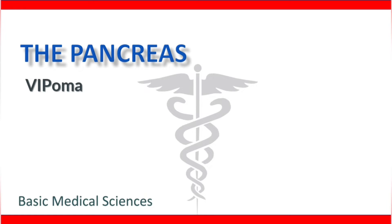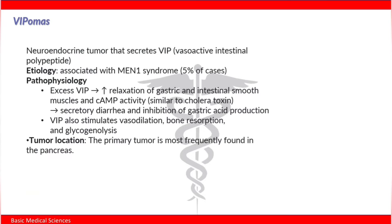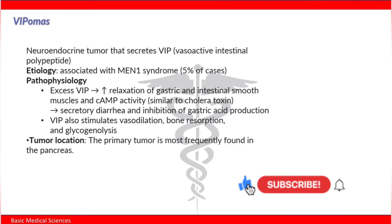Welcome. In this video we are going to talk about VIPomas. What are VIPomas? These are neuroendocrine tumors that secrete vasoactive intestinal polypeptide, or VIP. Etiology: VIPomas are usually associated with multiple endocrine neoplasia type 1 syndrome in 5% of cases.